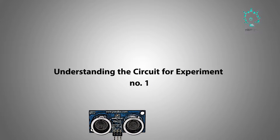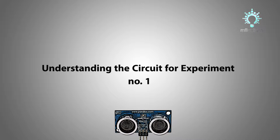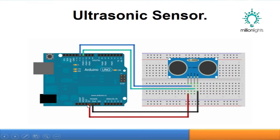This is how the circuit looks. We have four connections: VCC and Ground connected to the Arduino and sensor terminals. Pin 12 from Arduino is connected to the Trigger pin of the ultrasonic sensor, and pin 11 is connected to the Echo pin. The circuit is quite simple — VCC, Ground, Trigger, and Echo connected to pins 12 and 11 of the Arduino respectively. We will now build the circuit and then discuss the programming aspects.